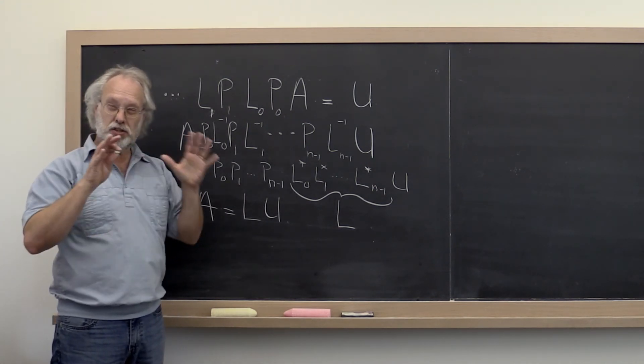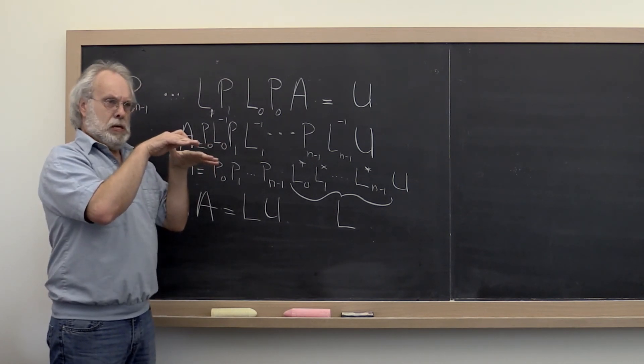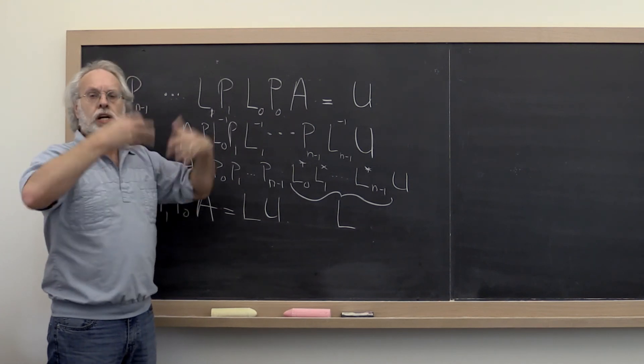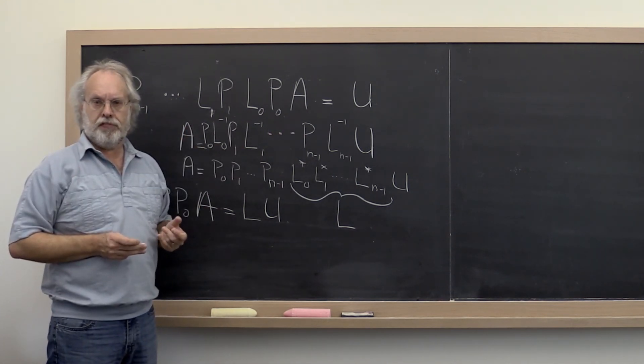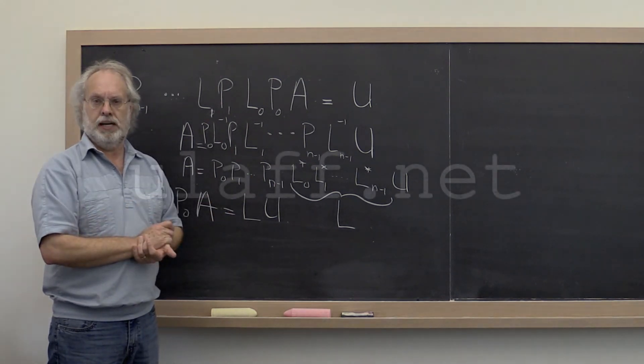Okay? So this goes back to, as we're encountering situations where we need to swap two rows, if only we had been smart enough up front to arrange the equations in the right order, then we wouldn't have had to do that.